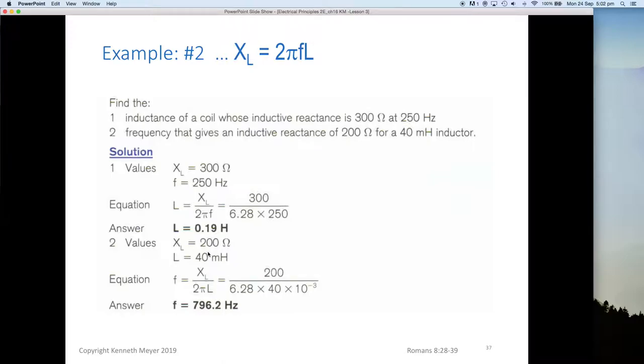Our second value, we had 200 ohms of XL and 40 millihenrys. This time we want to find the frequency. So again, this time we take the 2πL and divide it under the XL. So we end up with a transposed equation of frequency equals XL divided by 2πL. So 200 divided by 6.28 times 40 times 10 to the minus 3 gives us a frequency of 796.2 Hertz.